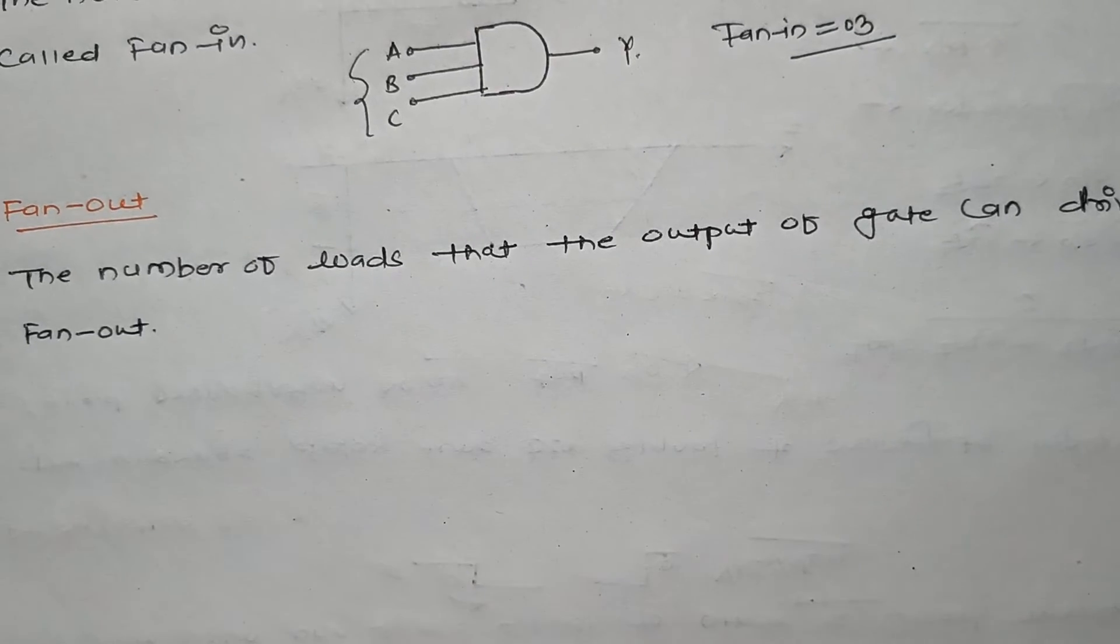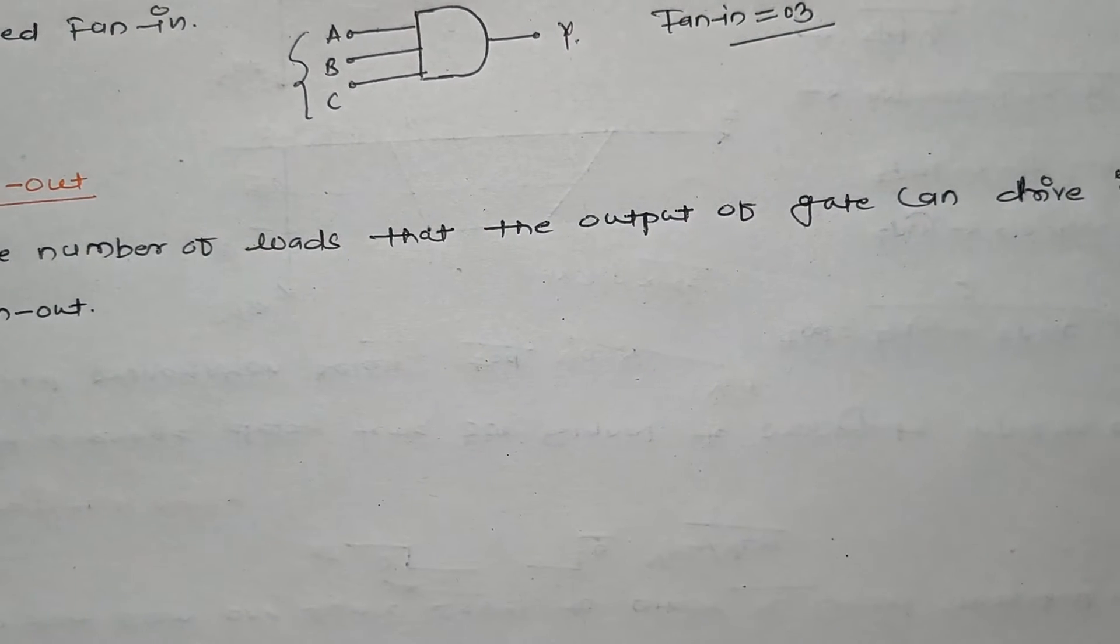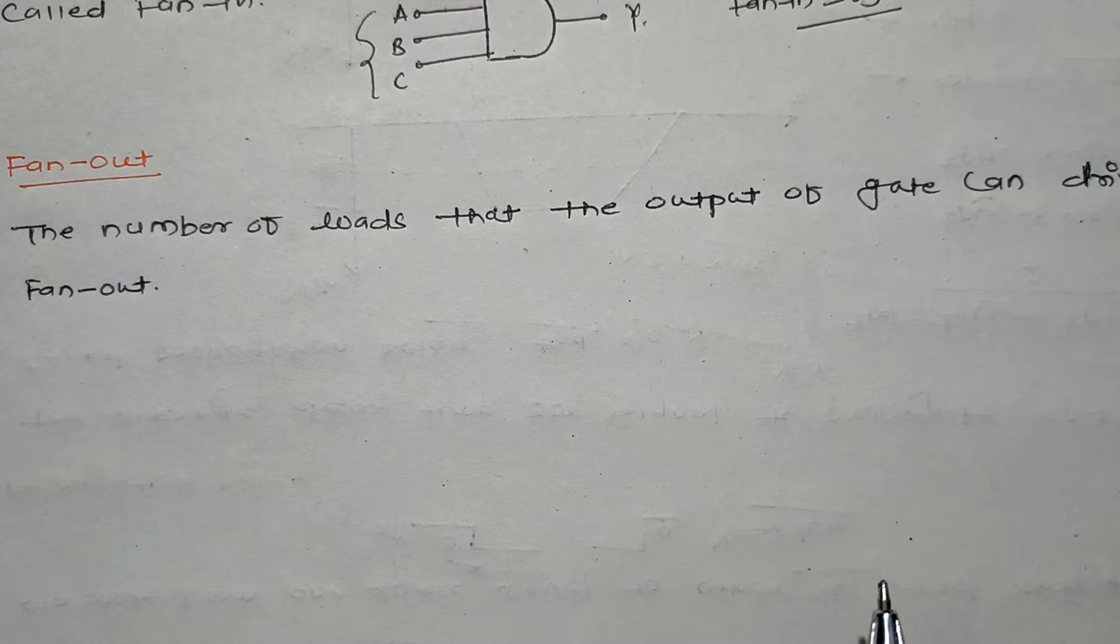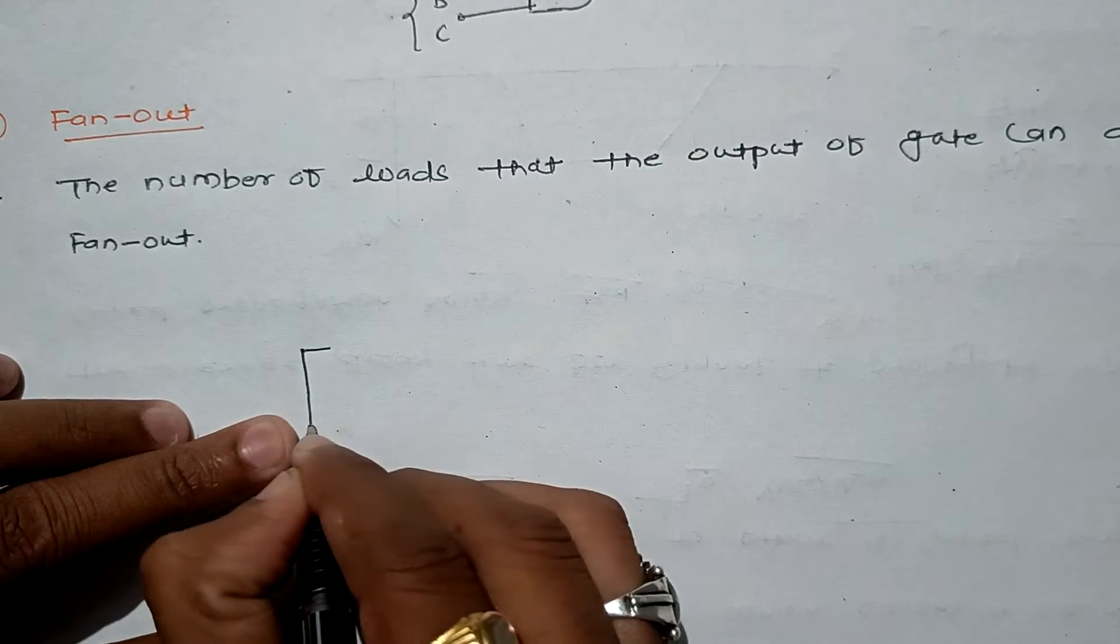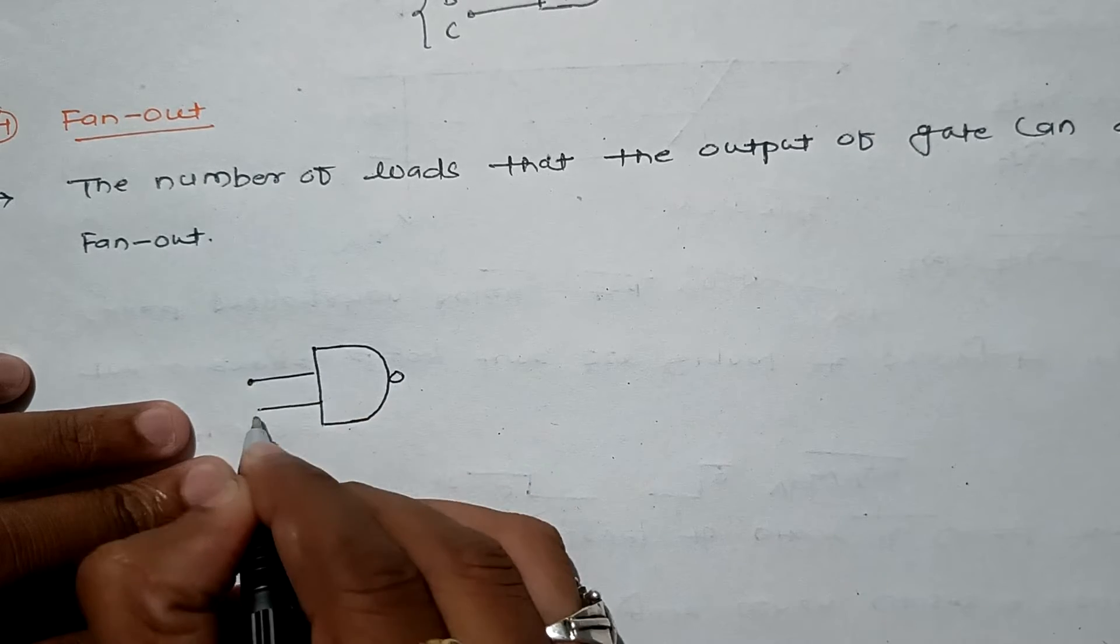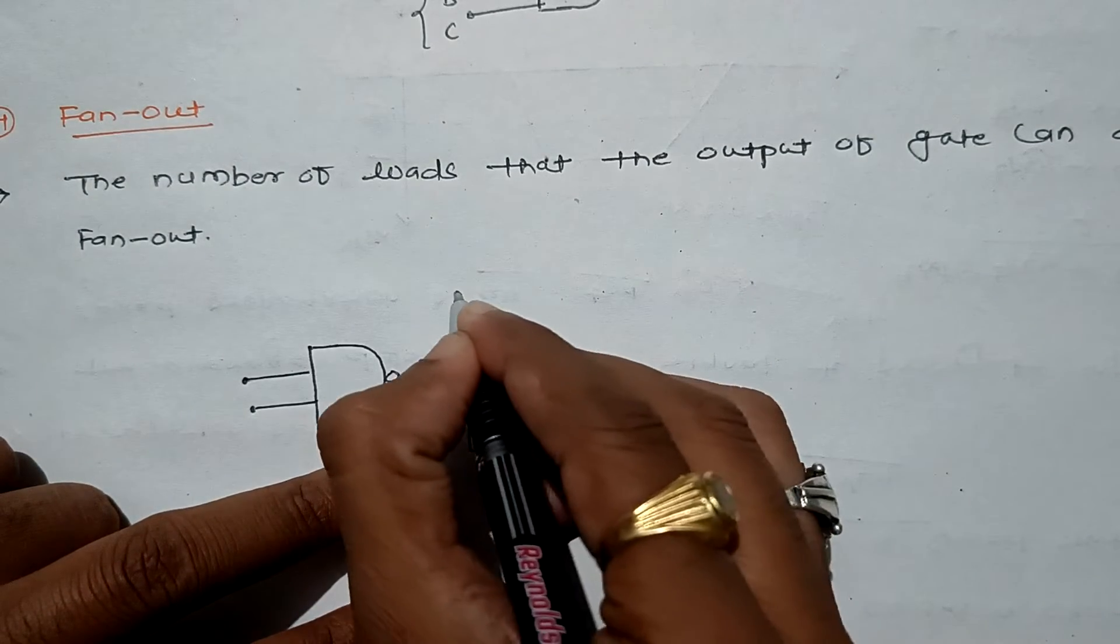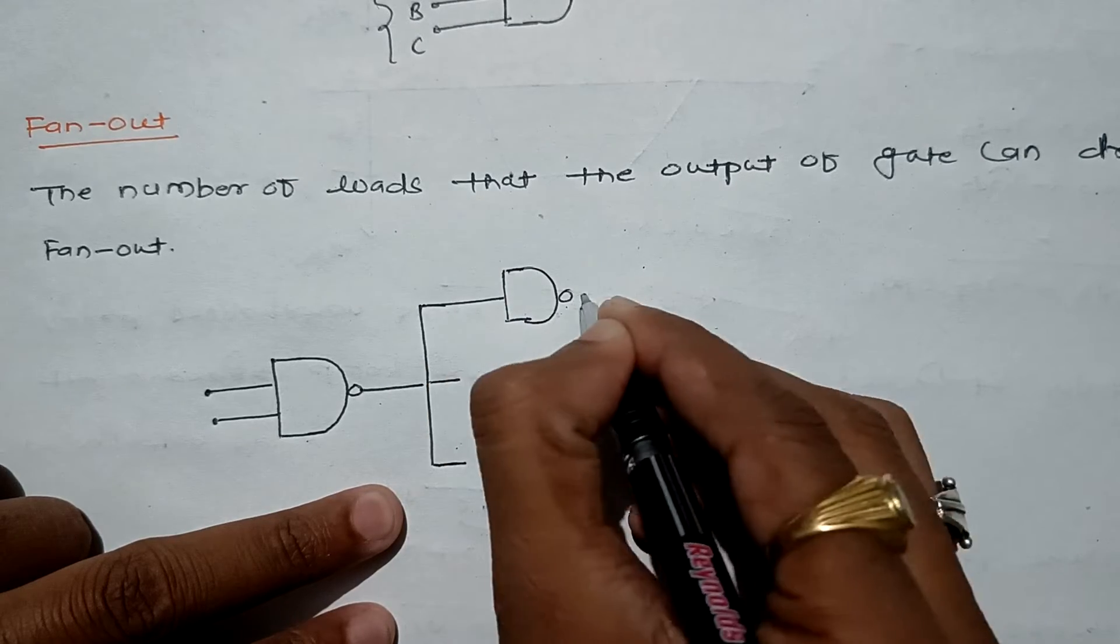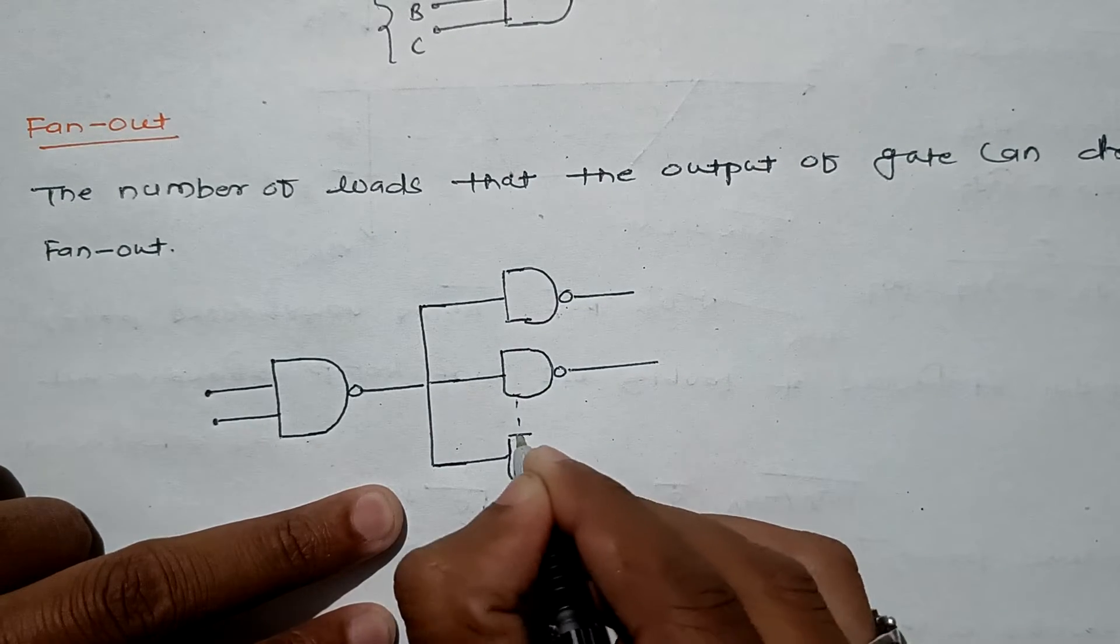Fan-out is the reverse - the number of loads that the output of a gate can drive is called fan-out. Let us consider we have a NAND gate (part of universal gates) with two inputs A and B, and this is our output. This output can handle loads - let's suppose it is handling the first NAND gate, then the second NAND gate, and so on.